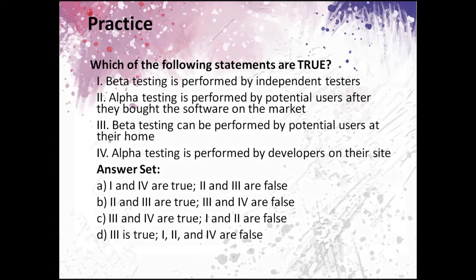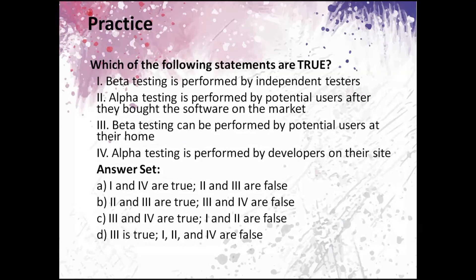Practice. Which of the following statements are true? Statement one: beta testing is performed by independent testers — this is not true. Statement two: alpha testing can be performed by independent testers — this is true, as an independent testing team is not involved in beta testing, only in alpha testing.